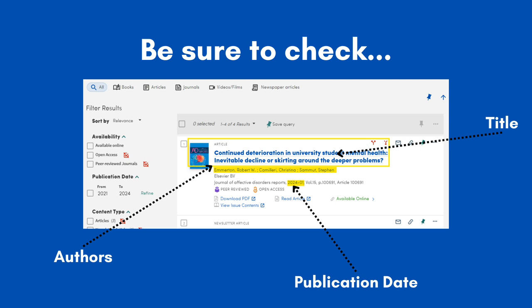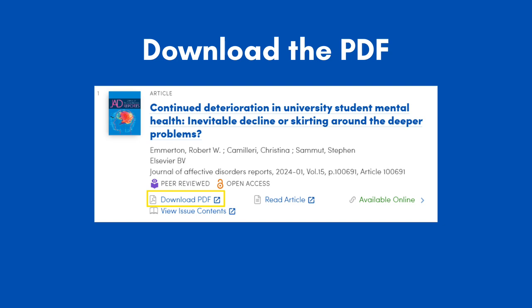Check to make sure the information for the article matches the one you're looking for, like the authors and publication date. Next, click Download PDF and the library will link you to the database where you can download the article.